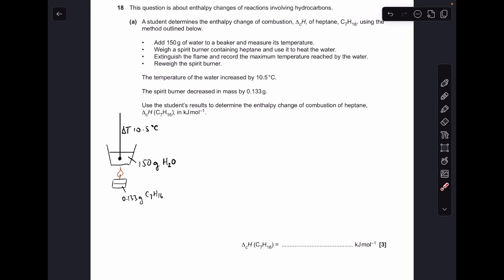So the first thing I'm going to do is work out the energy transferred to the water. So we do that using the Q equals mT delta T equation. So mass 150 C, specific heat capacity of water 4.18 and 10.5 degrees for the delta T. So that's how many joules was put into the water and we need to turn that into kilojoules because the final answer is in kilojoules per mole.